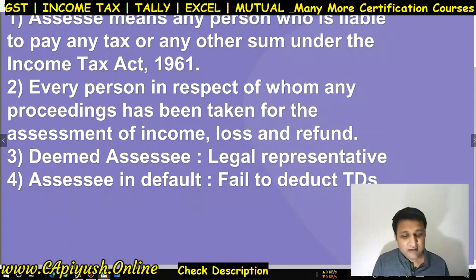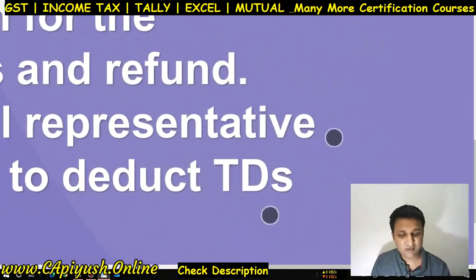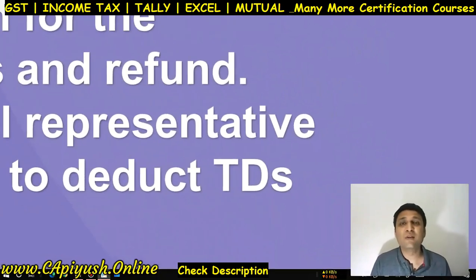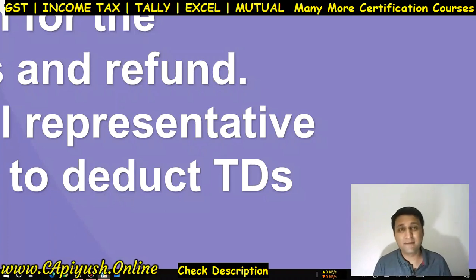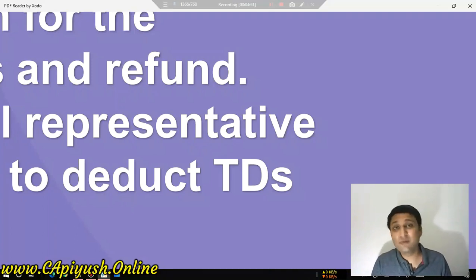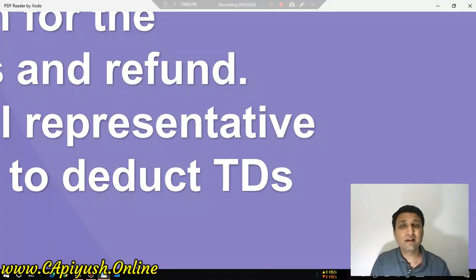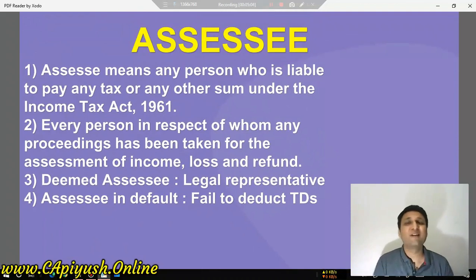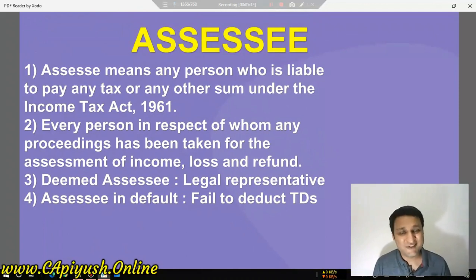Assessee in default — here TDS comes in. TDS is Tax Deducted at Source. If someone doesn't cut TDS, that will also be defaulted. TDS is the liability where you have to deduct the person's tax first. If you have a salaried employee and their income falls in the taxable slab, you have to deduct TDS. If the employer doesn't deduct it, then you become an assessee in default. So your new name is assessee, okay? Until you have income tax applicable, you are an assessee.